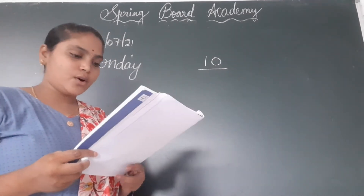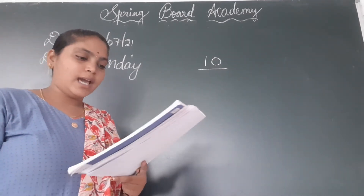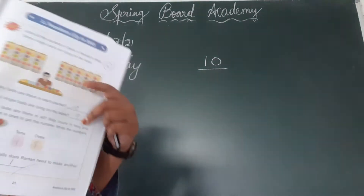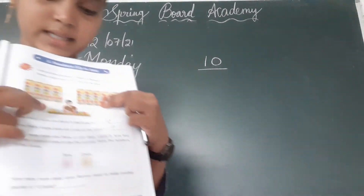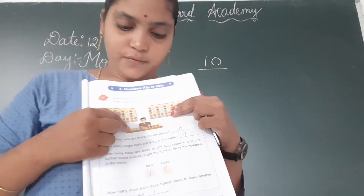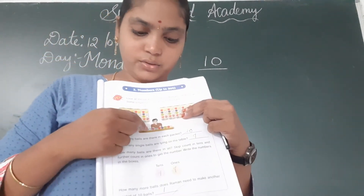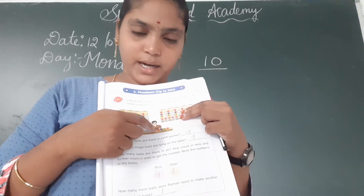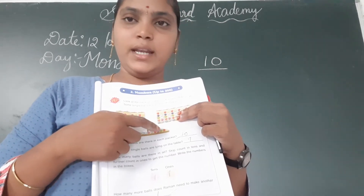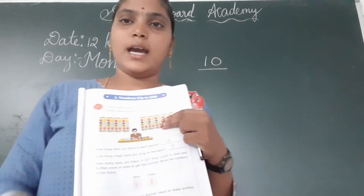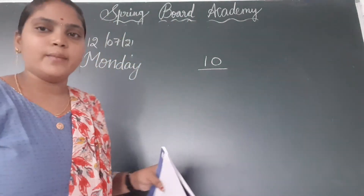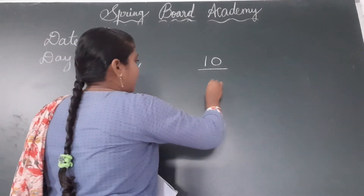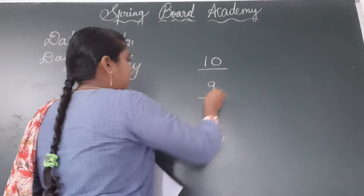How many single balls are lying on the table? Count: 1, 2, 3, 4, 5, 6, 7, 8, 9. So how many single balls are there? 9. Write 9.